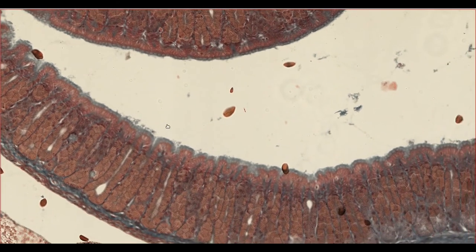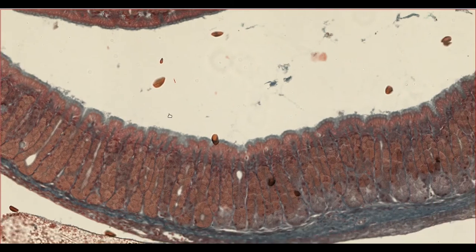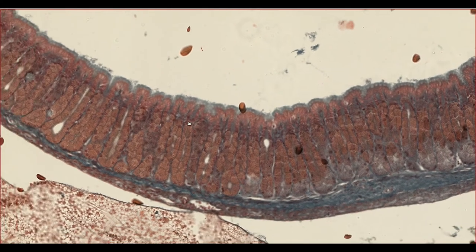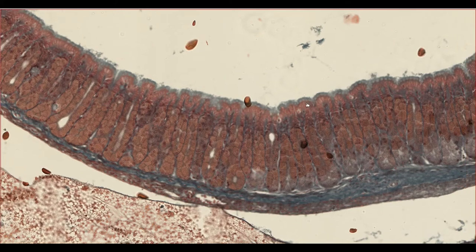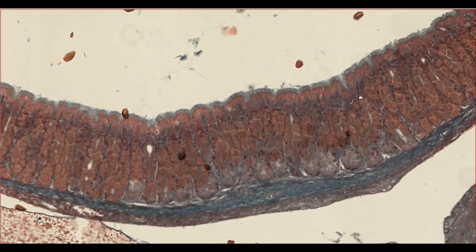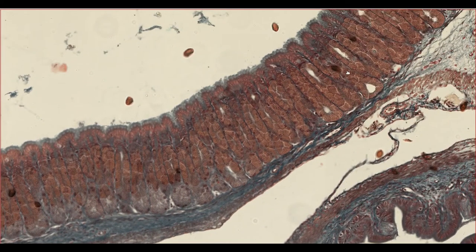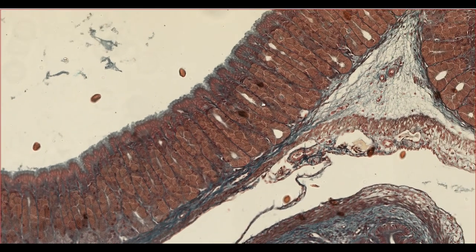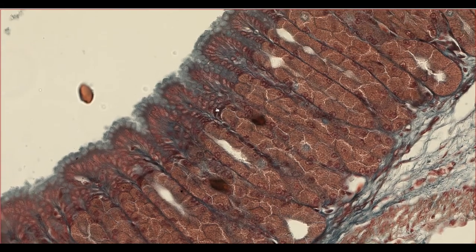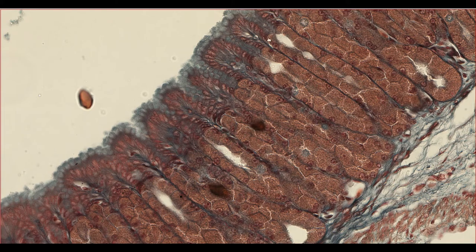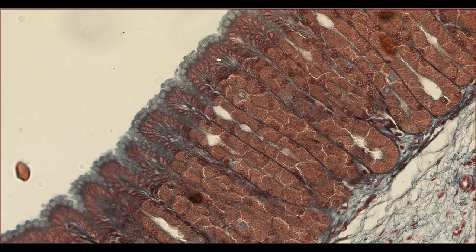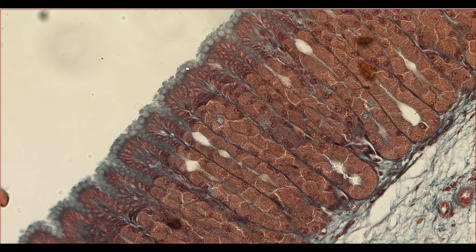In sharks, the stomach is divided into two regions: a muscular pyloric region and a glandular cardiac region, which we can see on these slides. The glandular region is lined by columnar epithelial cells, which we can see here. These have mucus-secreting goblet cells among them, or these more blue-staining cells.